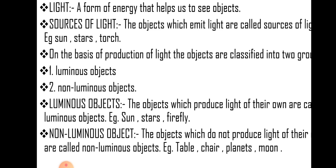Non-luminous objects are the objects which do not produce light of their own and are called non-luminous objects. For example, table, chair, planets, moons. Table and chair cannot produce light. Planets and moon give us light but that light is of the sun.